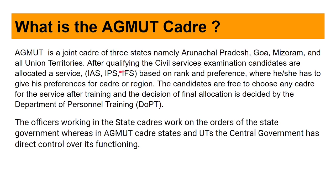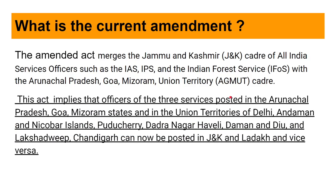After qualifying the civil services examination, candidates are allotted a service — it might be IAS, IPS, IFS, etc. — based on rank and preference, where they give preferences for cadre or region. The final allocation is decided by the DOPT, that is the Department of Personnel and Training, the nodal agency for allotting cadres. Officers working in state cadres work on orders of the state government, whereas officers in the AGMUT cadre work under direct central government control.